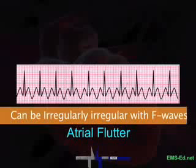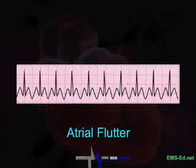Atrial flutter is not terribly unlike atrial fib. The etiology is similar to AFib — it's usually associated with organic disease such as congestive heart failure, and it's rarely seen with a myocardial infarction.